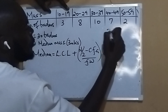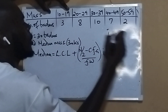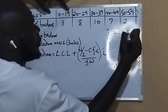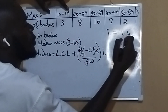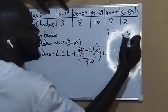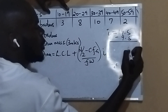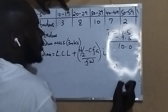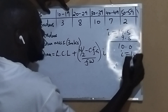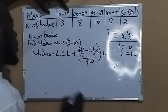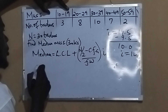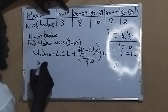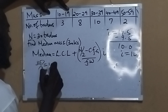Our interval here — you can use the upper class limit 19.5, minus the lowest class limit 9.5, which gives 10. So our class interval i is 10. Our n is 30, so when you take 30 divided by 2, you get 15.